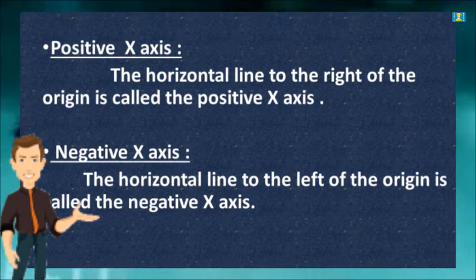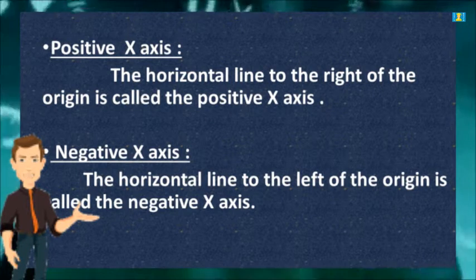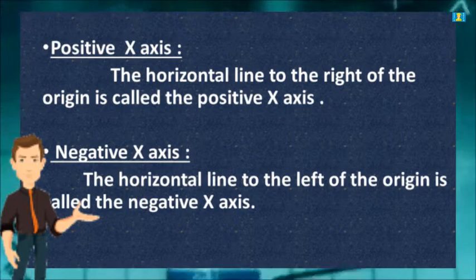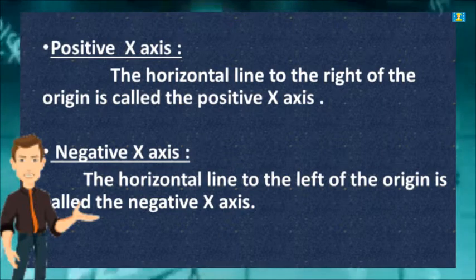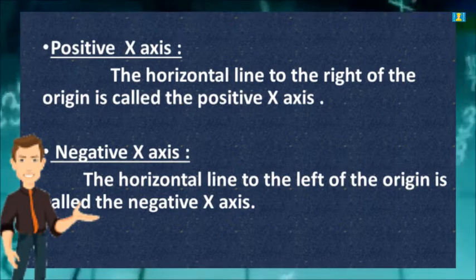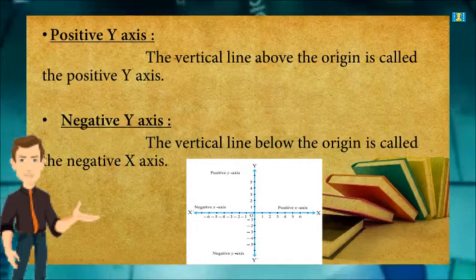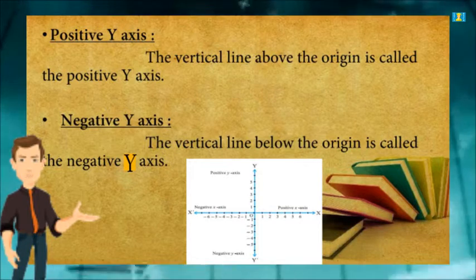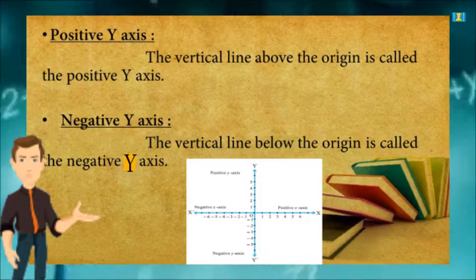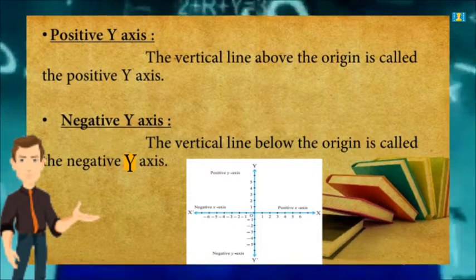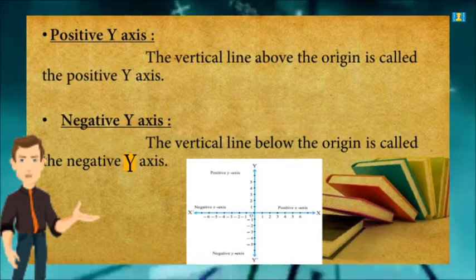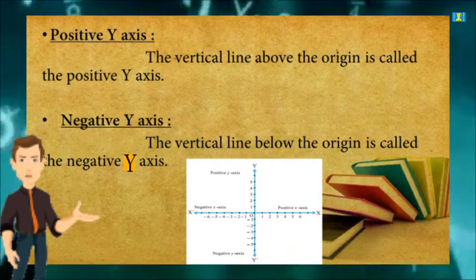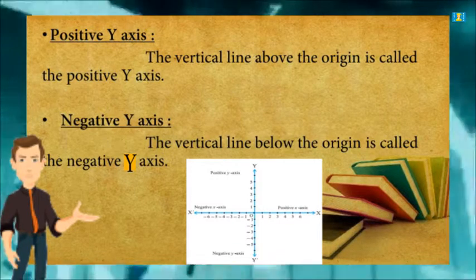The horizontal line to the right of the origin is called the positive x-axis. The horizontal line to the left of the origin is called the negative x-axis. The vertical line above the origin is called the positive y-axis.